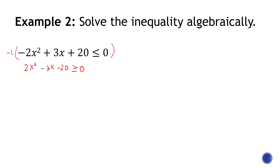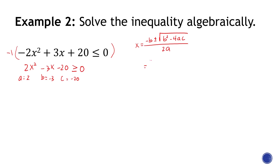I'm not sure if this can be factorized, so I'll use the quadratic formula. Identify a, b, and c: a is 2, b is negative 3, and c is negative 20. The quadratic formula is negative b plus-or-minus square root of b squared minus 4ac, all over 2a. Substituting: negative negative 3 plus-or-minus square root of negative 3 squared minus 4 times 2 times negative 20, all over 2 times 2.